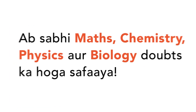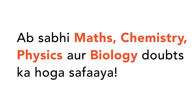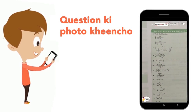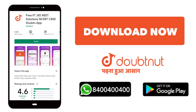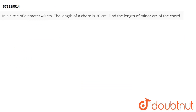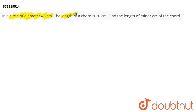Today we are required to find out the minor arc of the chord. It is given that in a circle of diameter 40 cm, the length of the chord is 20 cm, and we have to find the length of the minor arc.